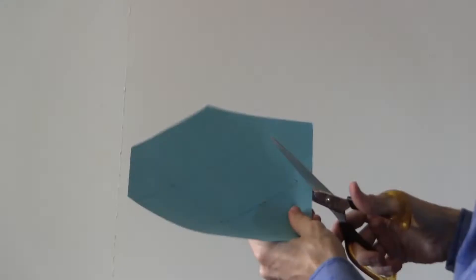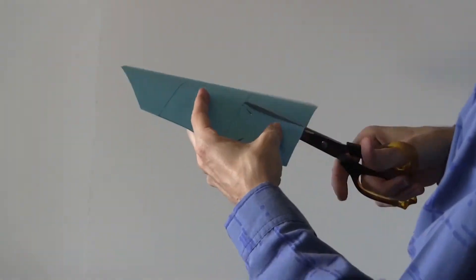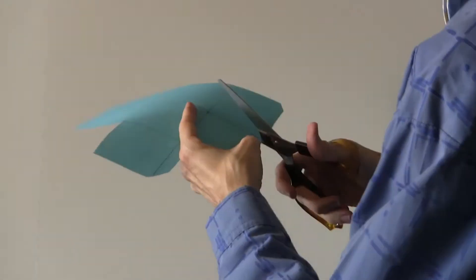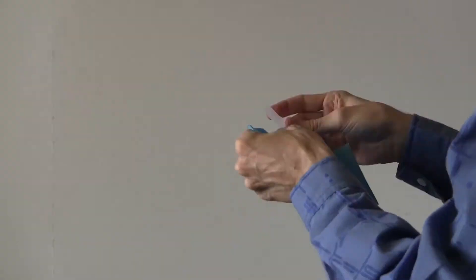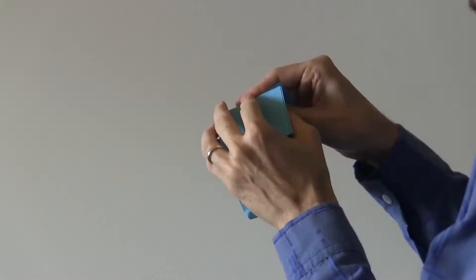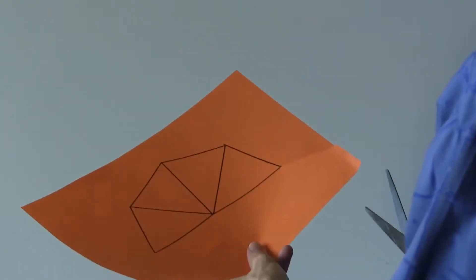Having drawn the nets, I can now cut them out. I'm leaving nice wide tabs so I can stick it together easily, like this, and then the pyramid.